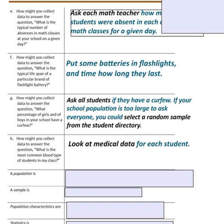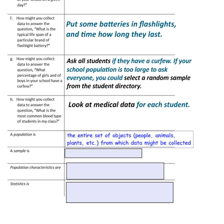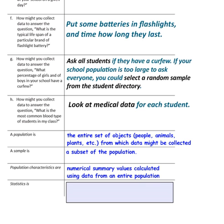Let's go over some vocabulary we'll be using in this unit. A population is the entire set of objects — people, animals, plants, etc. — from which data might be collected. The key word is 'entire set.' Pause the video and copy the vocabulary. A sample is a subset of the population; it is smaller than and part of the population. Population characteristics are numerical summary values calculated using data from the entire population.